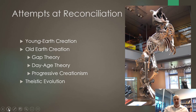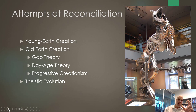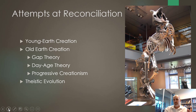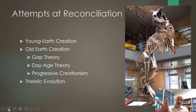Old earth creationists don't accept the evolutionary part of naturalistic evolution but they do accept the time. They insert millions of years into the days — the word 'day' can mean 'age,' so they say each day covers tens or hundreds of millions of years. Based on that interpretation, you end up with three basic old earth positions: the gap theory, day-age theory, and progressive creationism. They say God supernaturally created different groups of animals over millions of years, with the last group — man — created about 200,000 years ago.